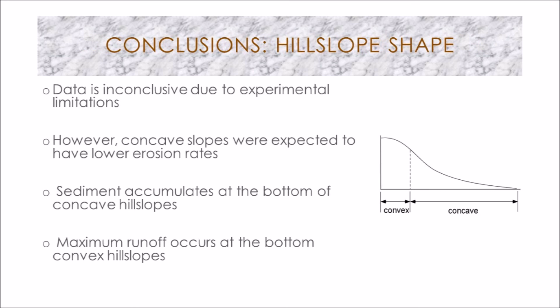For the hillslope shape conclusions, the data were quite inconclusive due to experimental limitations. However, in general, concave slopes were expected to and did show lower erosion rates, because the steepest slope in concave hillslopes occurs at the top and sediment accumulates at the bottom, whereas in convex hillslopes, maximum runoff occurs at the bottom and more runoff leaves the landscape.